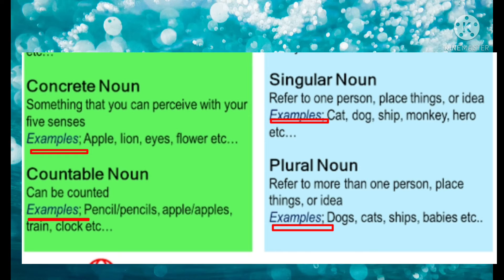Next, we are going to see concrete noun — something that you can perceive with your five senses. That means you can touch and feel it. Those things will come under concrete noun. Examples: apple, lion, ice, flower, etc. For instance, if a person gives an apple to you, you can touch it, taste it, and smell it.